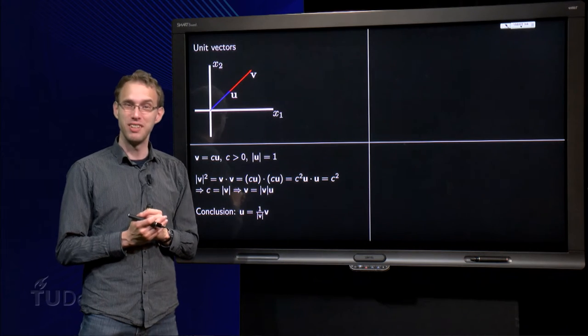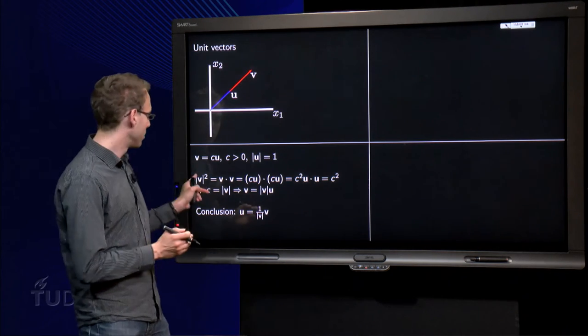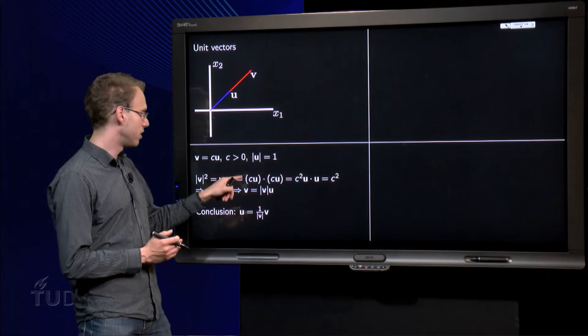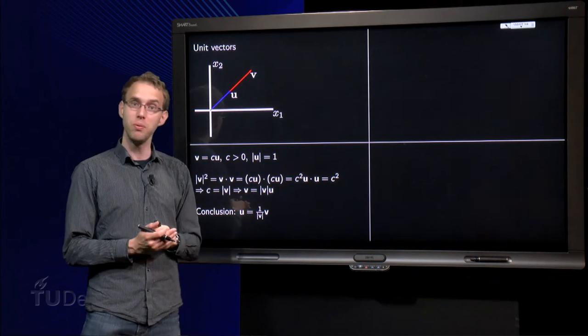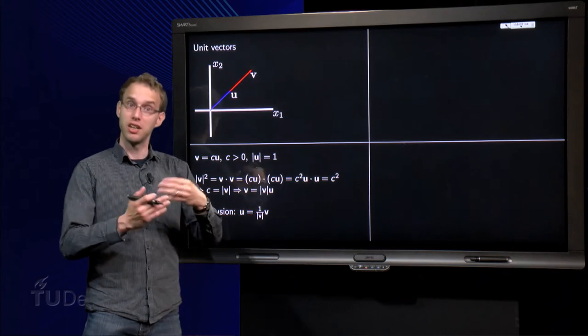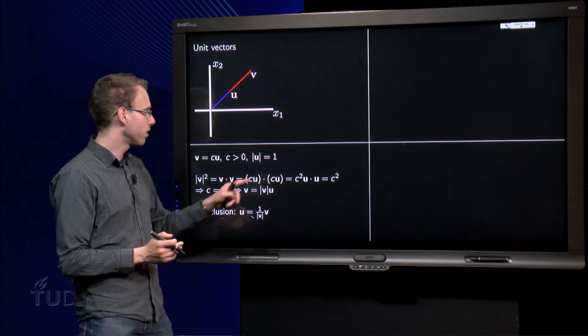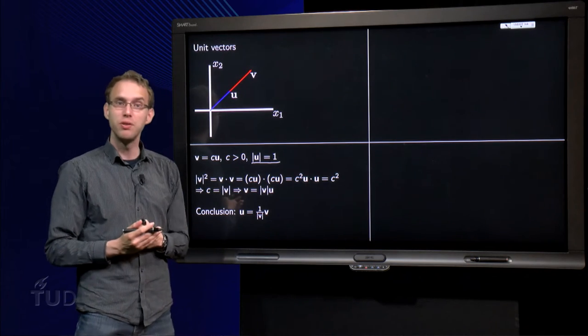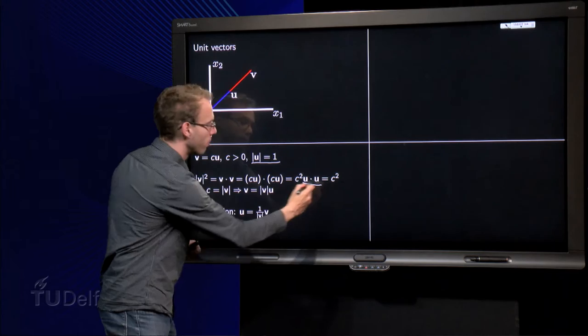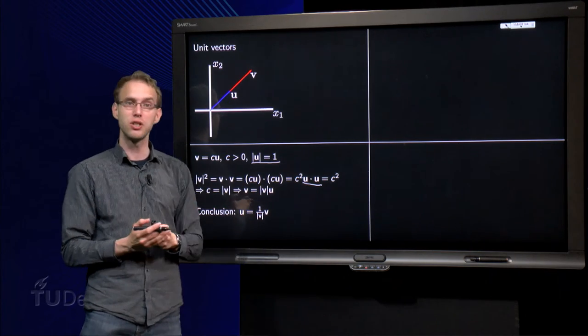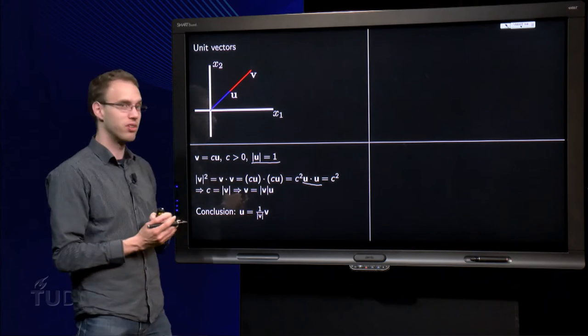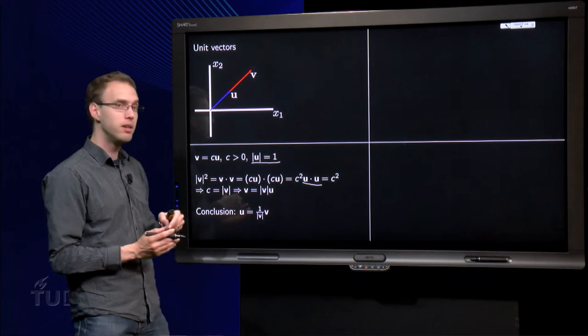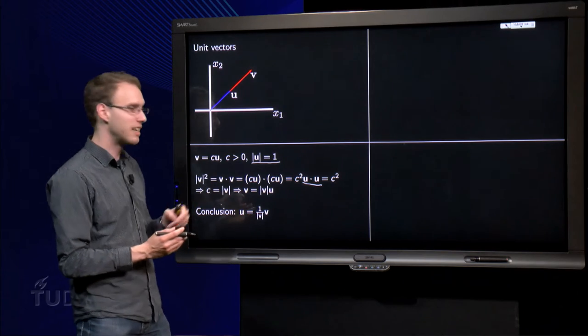So what can we do? Well, if we compute the length of v squared, we can see something nice happen. So the length of v squared equals v in the product with v. We know v equals c times u, so that equals cu in the product cu. We can factor out the c's, they are scalars, they are constants, so you can take them before the inner product, so we get c squared u inner product u. But the length of u equals 1, so u inner product u equals 1. So now the u drops out and we get c squared. So now we have an equation, c squared equals the length of v squared. We can take the square root, so c is the positive square root of the length of v, because c was positive. So c is exactly the length of v.